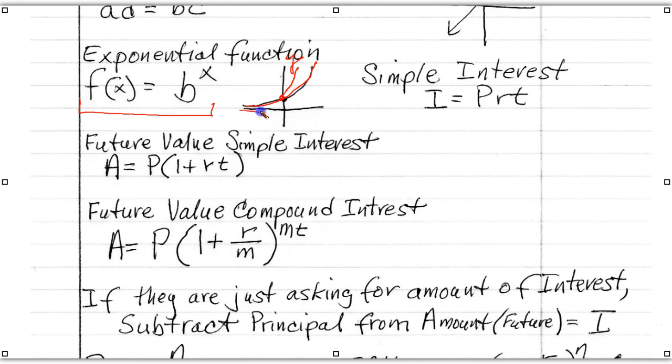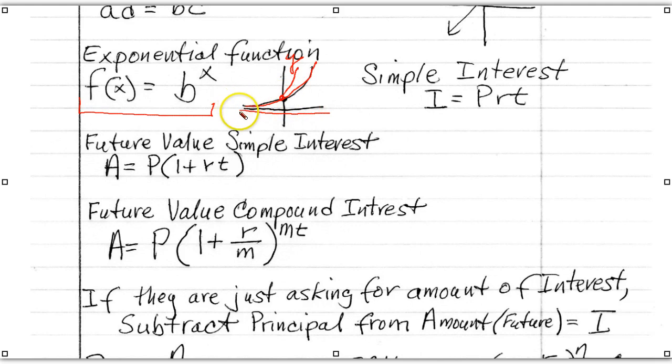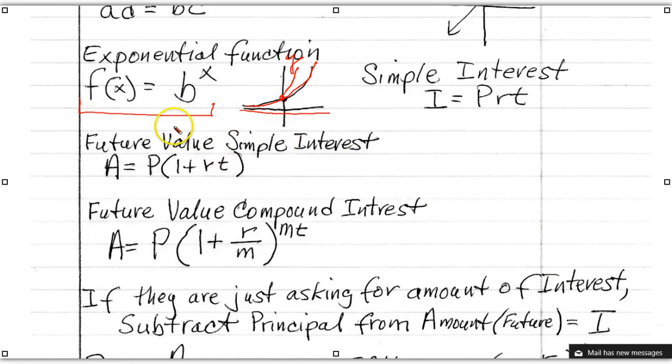You remember we said that this was the horizontal asymptote, that this line here, as it went, got closer and closer but never touched. Okay, we're getting some other things there.